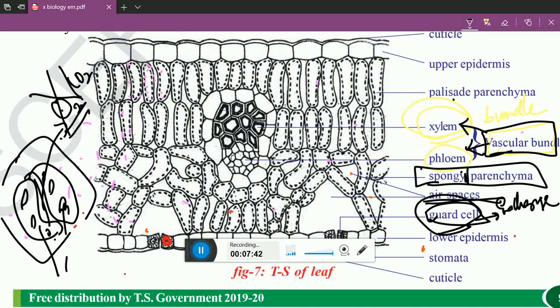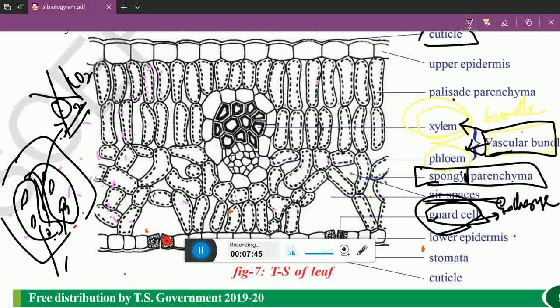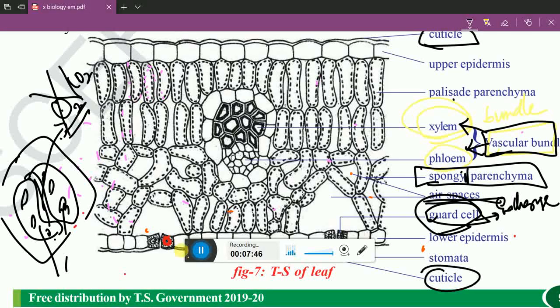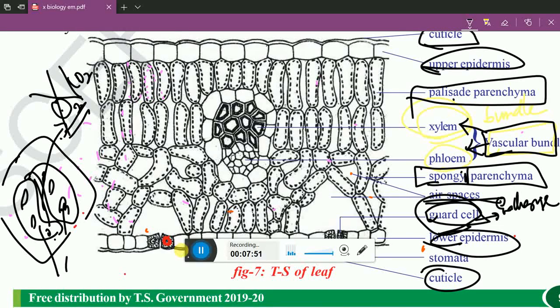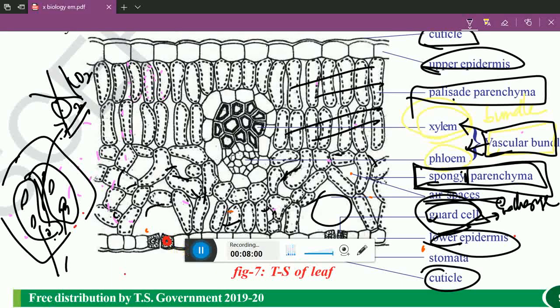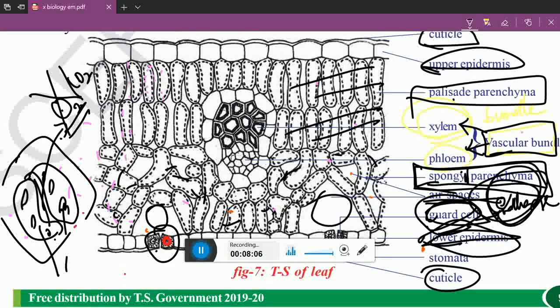This much only they will ask in this topic. Upper layer is called as cuticle. Both cuticles are present. Double epidermis, lower epidermis, palisade parenchyma and spongy parenchyma. Air spaces are in the lower epidermis. You can see guard cells which will help in exchanging of gases. This you need to remember for T.S. of leaf.